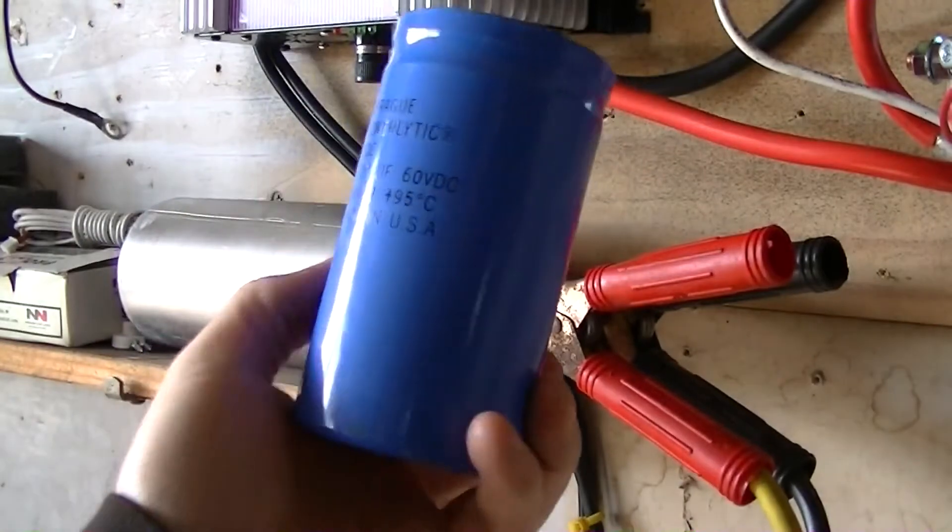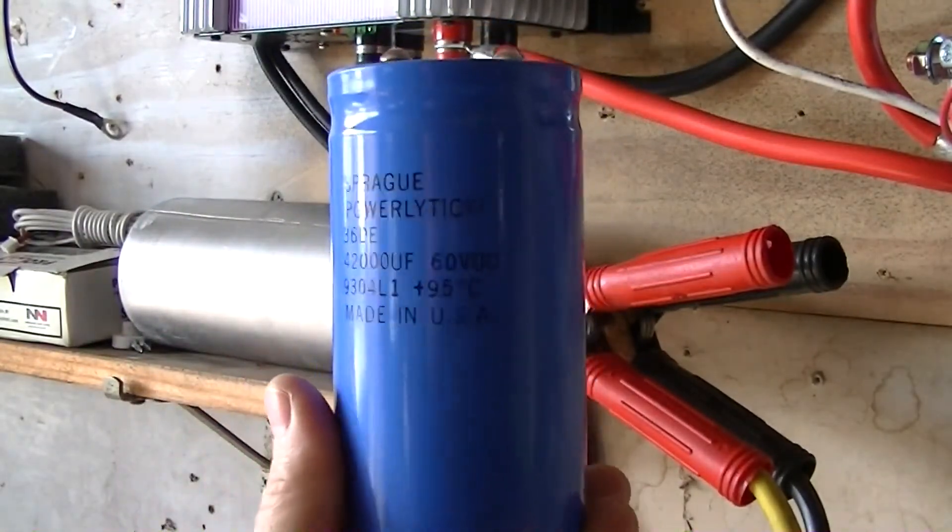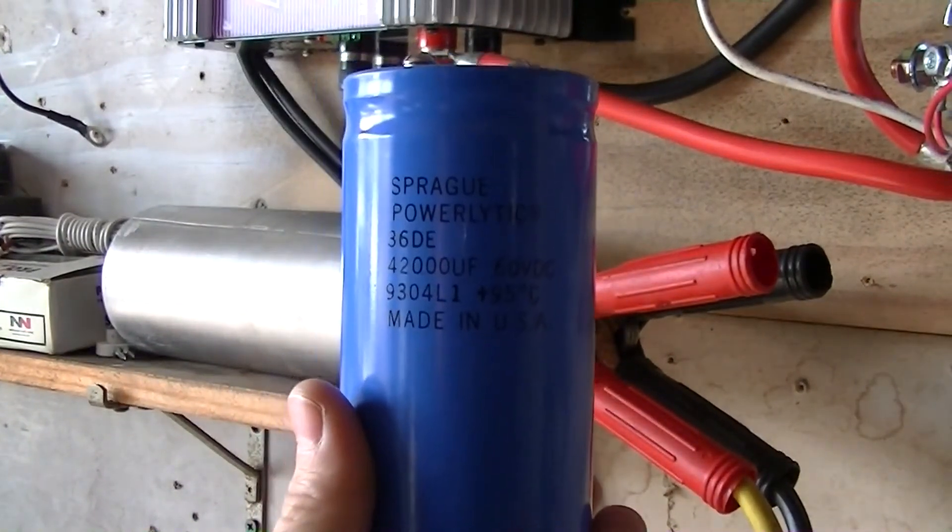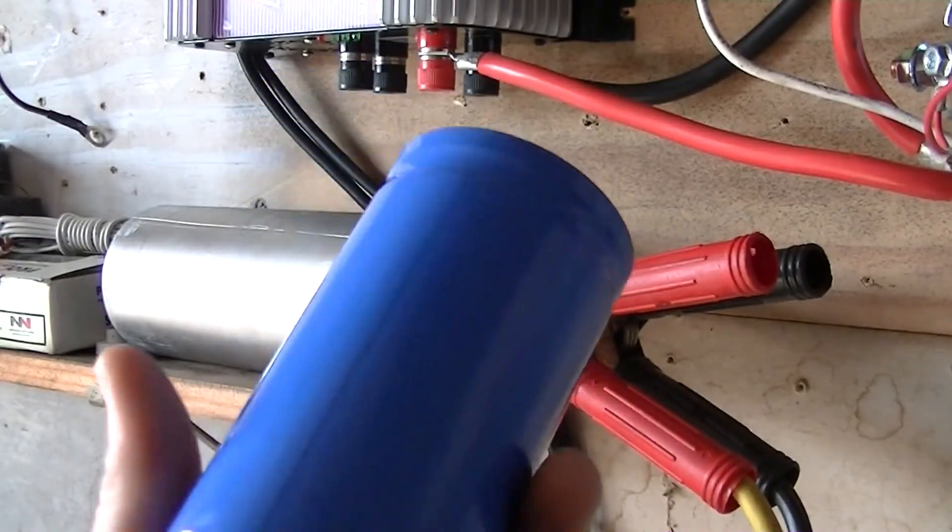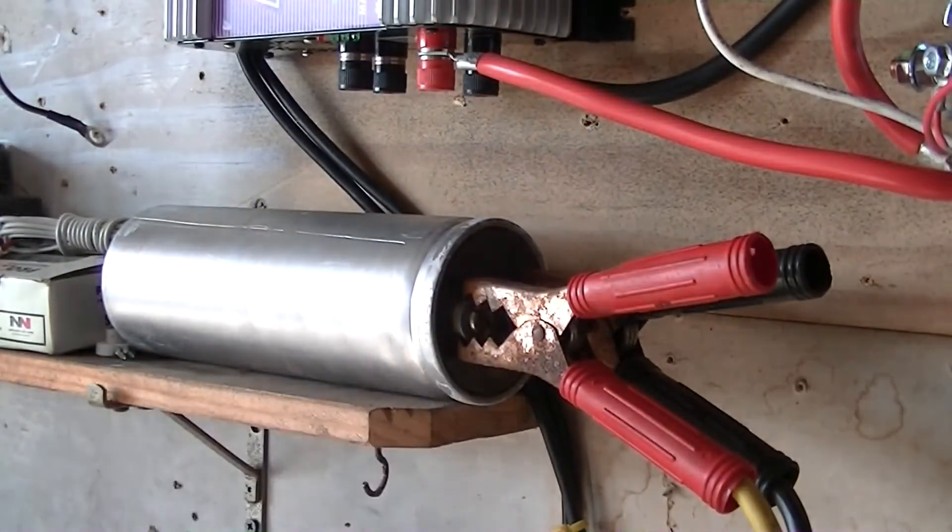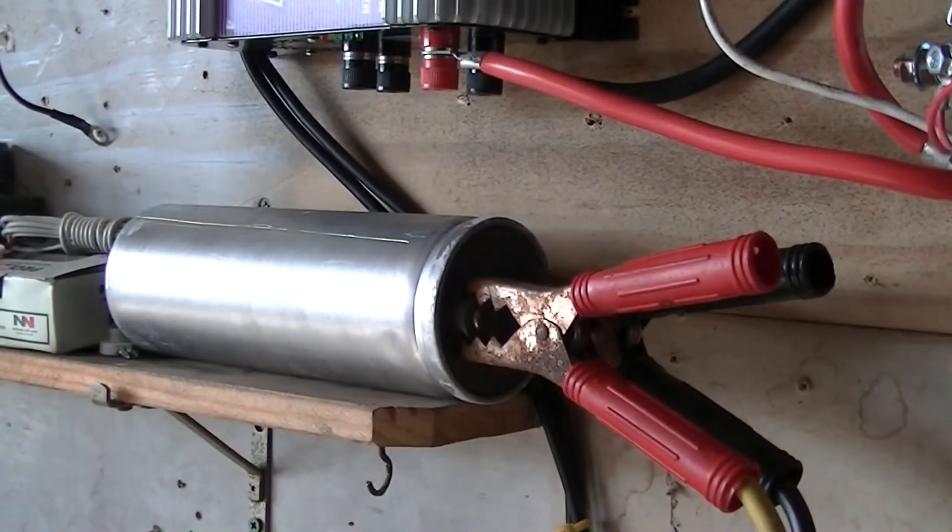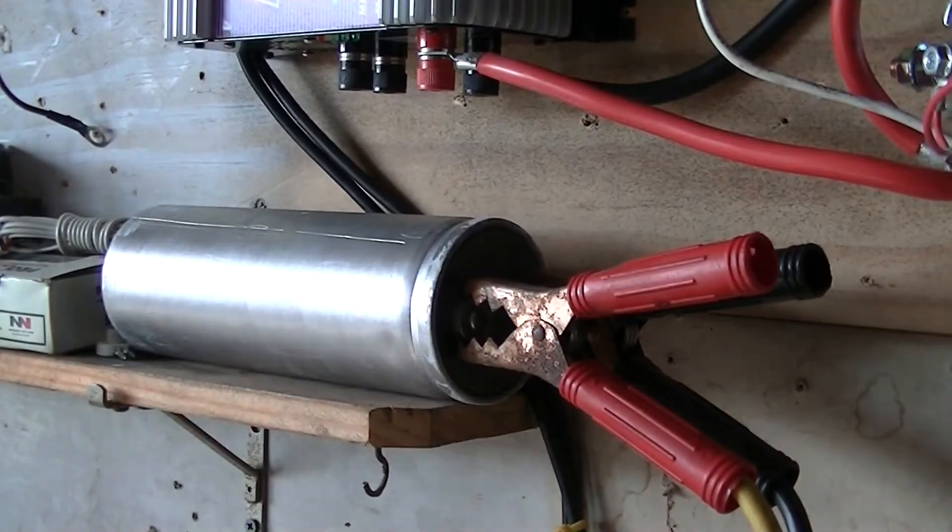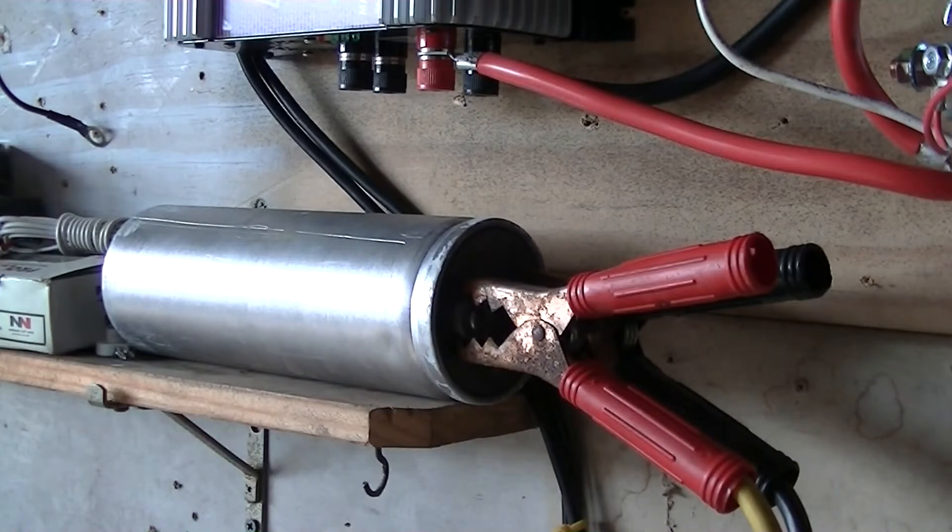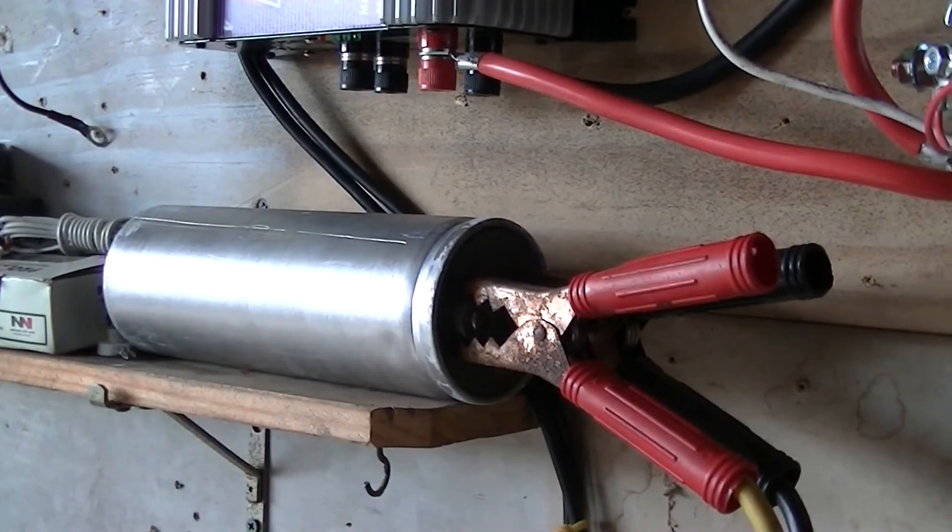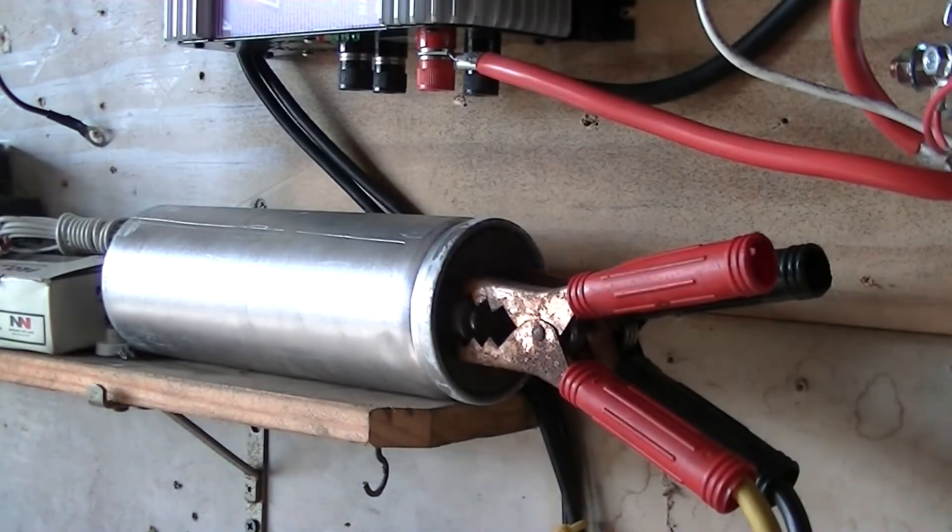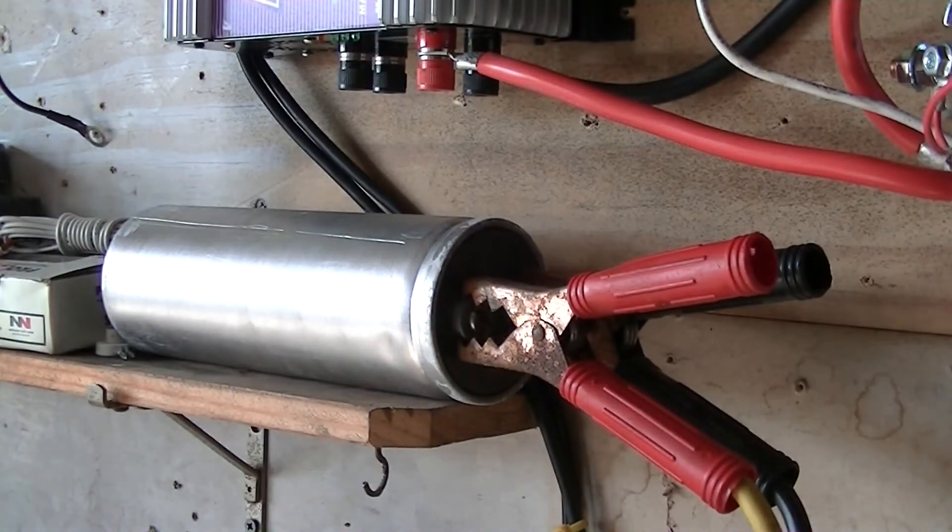Now I do have this one. I ordered this one on eBay. I'm going to pay 20 bucks for it. It's a 42,000 microfarad capacitor, and that one's rated at 60 volts. But this one wasn't really giving me the smoothing that I wanted.